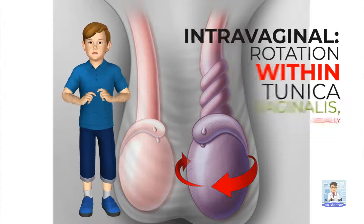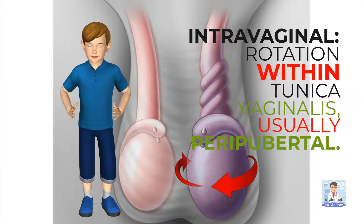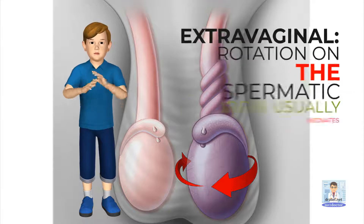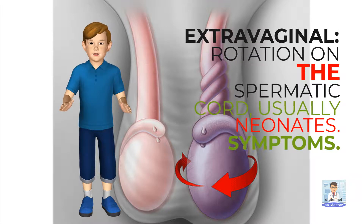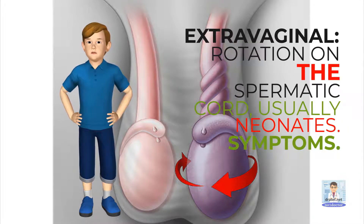Types. Intravaginal: rotation within the tunica vaginalis, usually peripubertal. Extravaginal: rotation on the spermatic cord, usually in neonates.